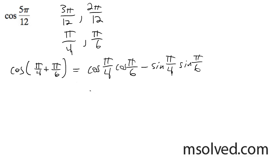Now what's going to happen here next is I'm going to convert these. So √2 over 2 times π over 6, which is √3 over 2, and then minus π over 4, which is √2 over 2, and the sine of π over 6, which is 1 half.